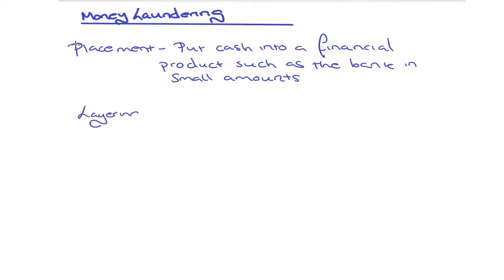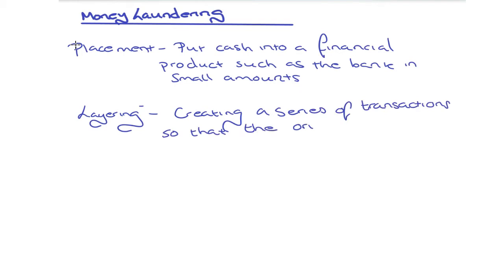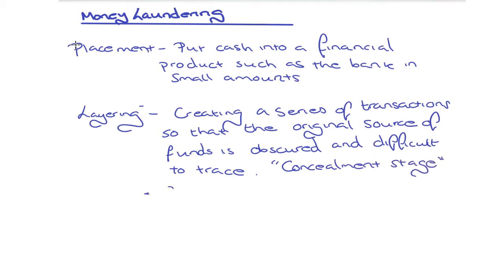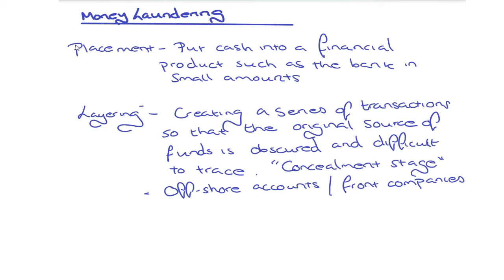Next we have layering. Layering is where they create a series of transactions so that the original source of the funds is obscured and difficult to trace — it's also known as the concealment stage. They might do this by creating offshore accounts, with multiple transactions being transferred between bank accounts where the very source of the money comes from an offshore account.